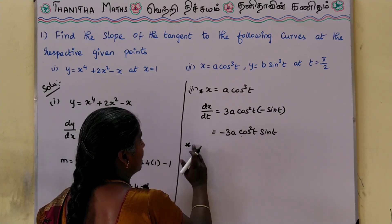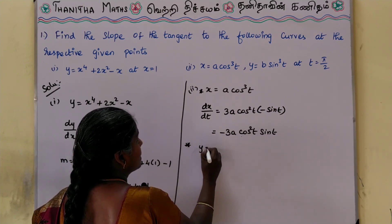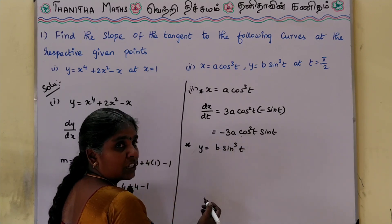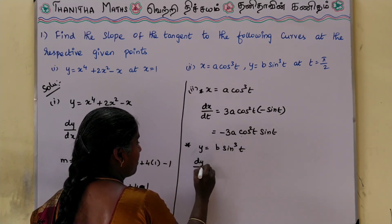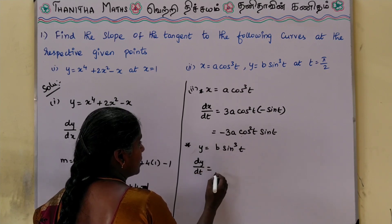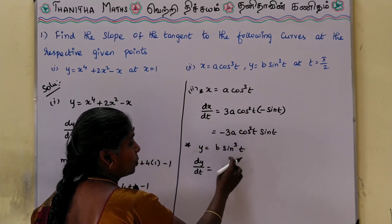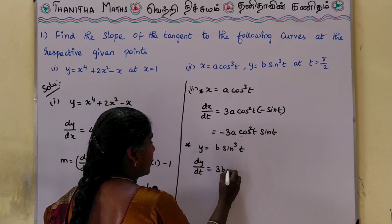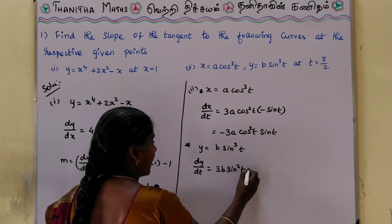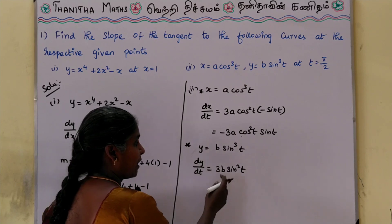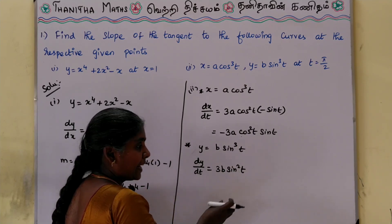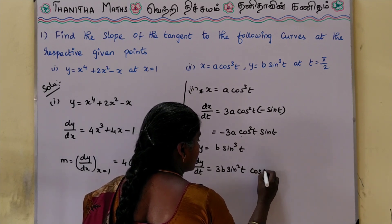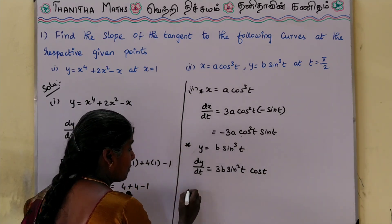Next, find dy by dt. The equation is y is equal to b sin cube t. Differentiate with respect to t. Again treating sin cube t like x cube: dy by dt is equal to 3b sin square t. Then differentiate sin t, which gives cos t. So dy by dt is equal to 3b sin square t cos t.